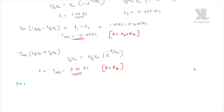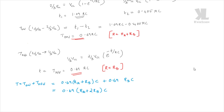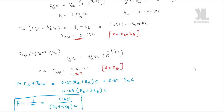The total time period T equals T_on plus T_off, which is 0.69(RA + RB)C plus 0.69(RB)C. By rearranging, we get T equal to 0.69(RA + 2RB)C. From this, the frequency equals 1 divided by T, which can be written as 1.45 divided by (RA + 2RB) times C. This is the frequency of the astable multivibrator using IC 555.